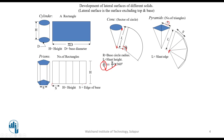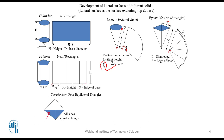The tetrahedron is considered similarly to a pyramid, but instead of a given slant height, a slant edge is given. All sides are equal in a tetrahedron. The base is a triangle, and the development consists of three identical triangular faces plus the base, giving four triangles total.